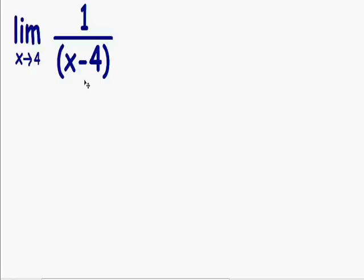So since the limit is when x approaches 4, I'm going to plug in a 4 everywhere that there is an x. So instead of 1 over (x - 4), I'm going to put 1 over (4 - 4).